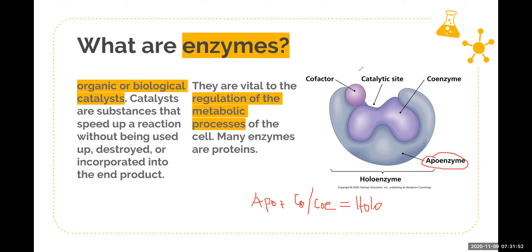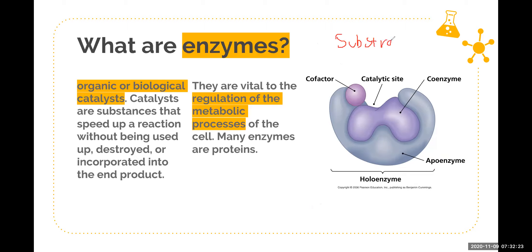Enzymes are very specific. If an enzyme breaks down things, that is what it specializes in — it cannot build up structures or compounds. They have specific substrates. For example, with starch, amylase is one enzyme that can hydrolyze starch. There are also other enzymes that can hydrolyze starch, but they have specific actions and specific rates of reaction, so they differ in their properties. They are really very specific.